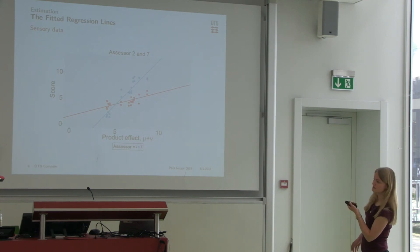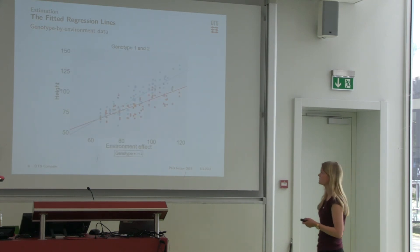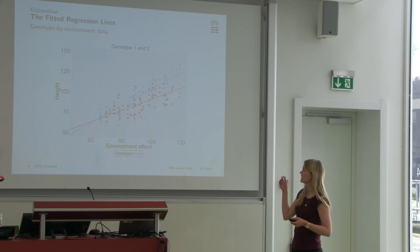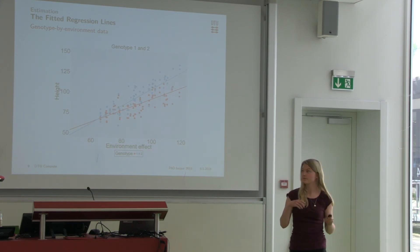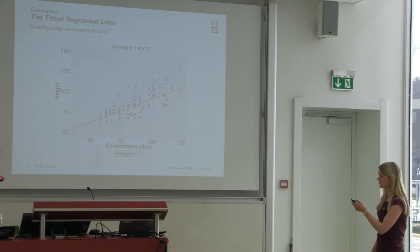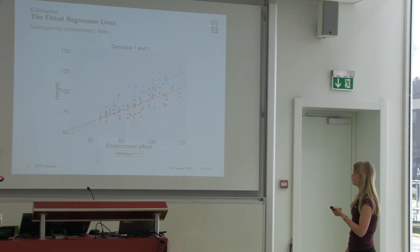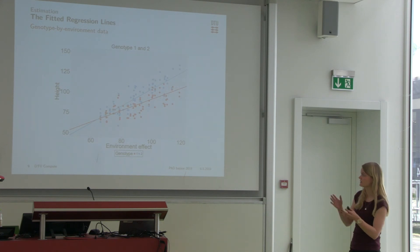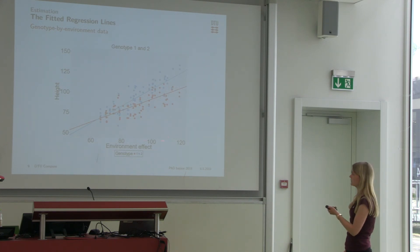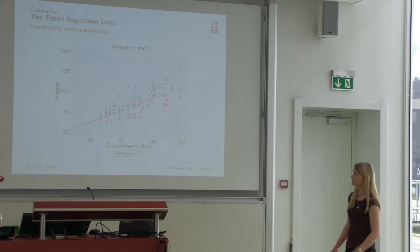We see a similar situation here where I have chosen to plot some data from an agricultural study where I look at the height of the plants. I have chosen the first two genotypes — genotype 2, the blue line, is more sensitive to the environment, which is why the height is more dependent on the environment effect. So we also see a steep regression line compared to genotype 1.